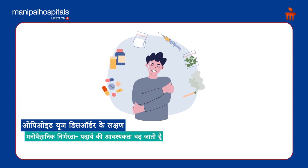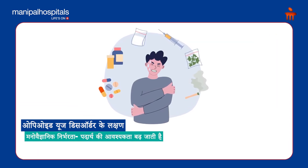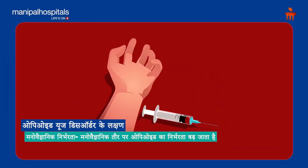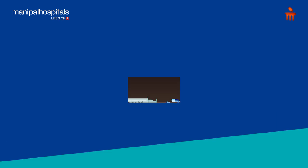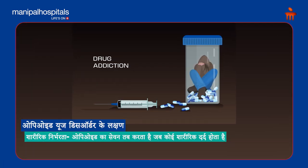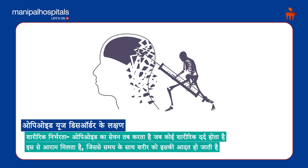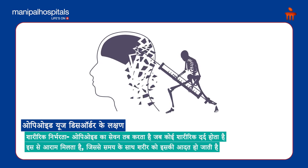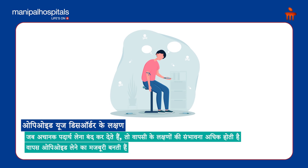Opioid use disorder, opioid dependence syndrome, or withdrawal syndrome — we have two types of dependence. One is psychological dependence: psychologically the person will have a craving for that substance, and when he takes the substance he will feel better and relaxed, therefore he has a psychological dependence. The second is physical dependence: when someone uses opioids, there are physical symptoms such as pain or other symptoms.